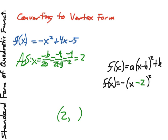And we go x minus that x portion, so we have x minus 2. Now, let's find the y portion. f of x equals the opposite of 2 squared plus 4 times 2 minus 5.